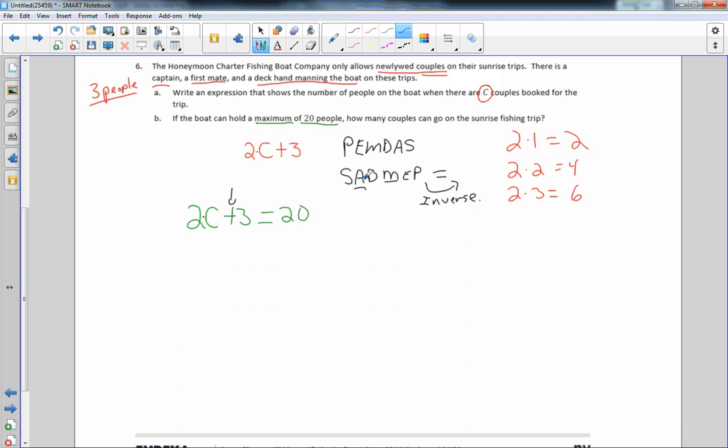So I'm going to subtract 3 from both sides. So when I subtract 3 from here, I'm left with 2C. Three minus three is zero. 2C plus zero is 2C. Twenty minus three equals 17.